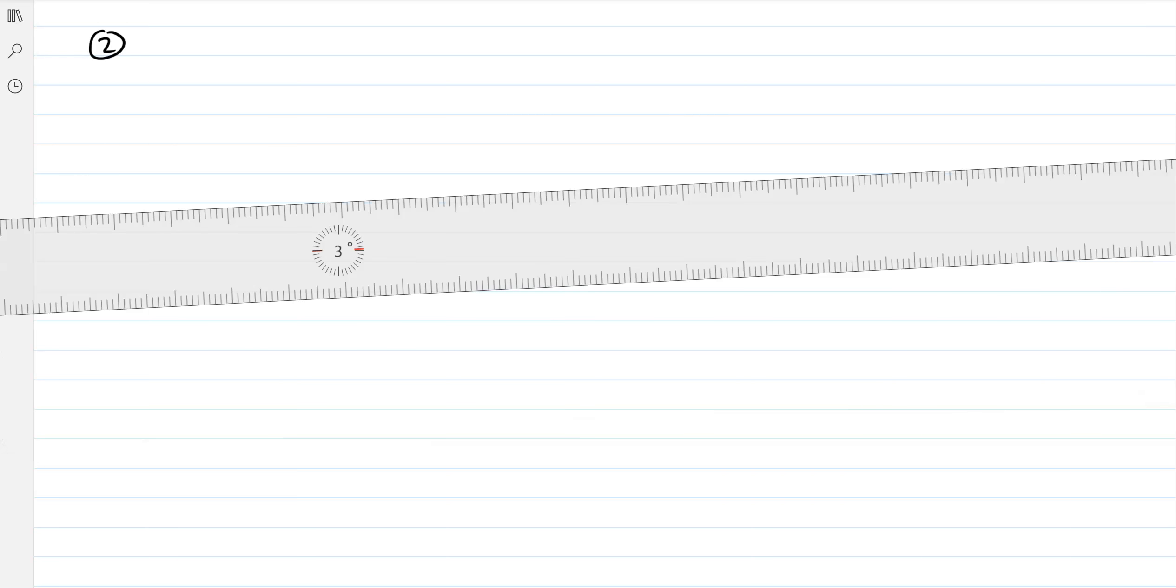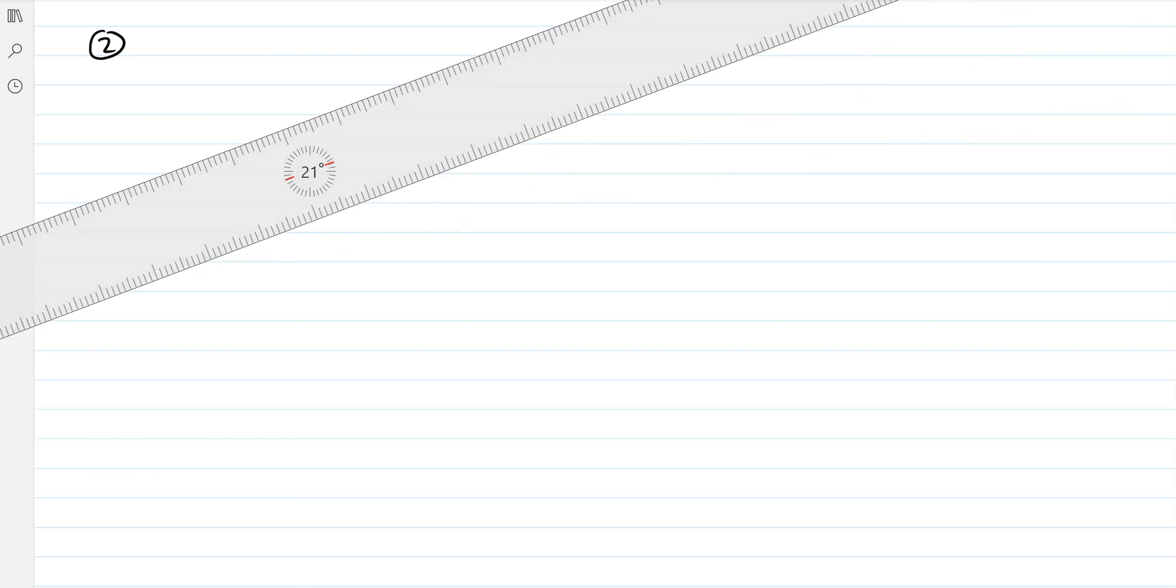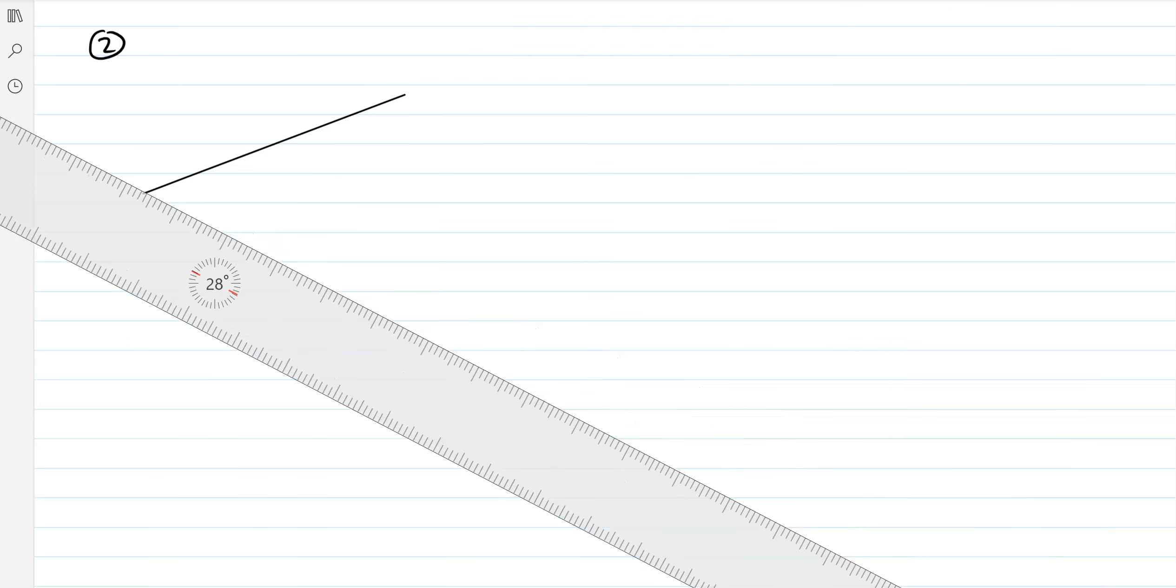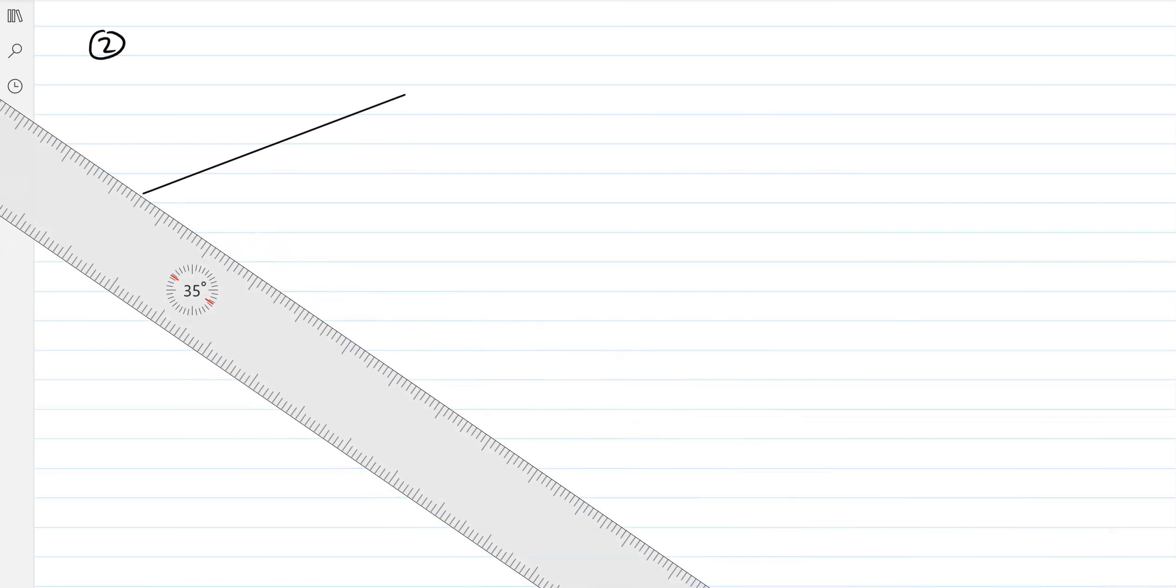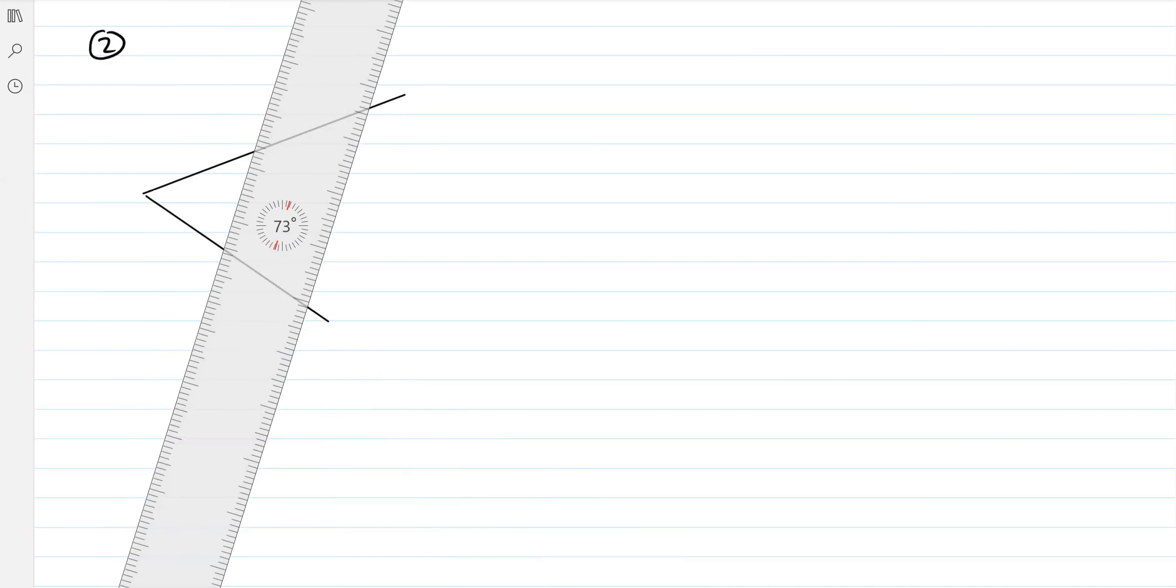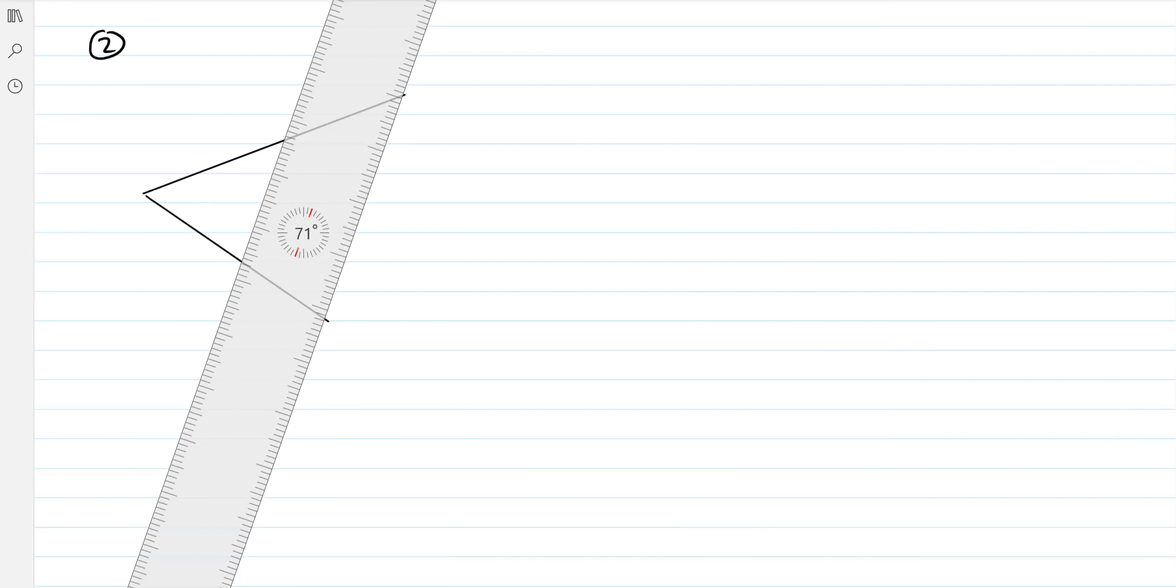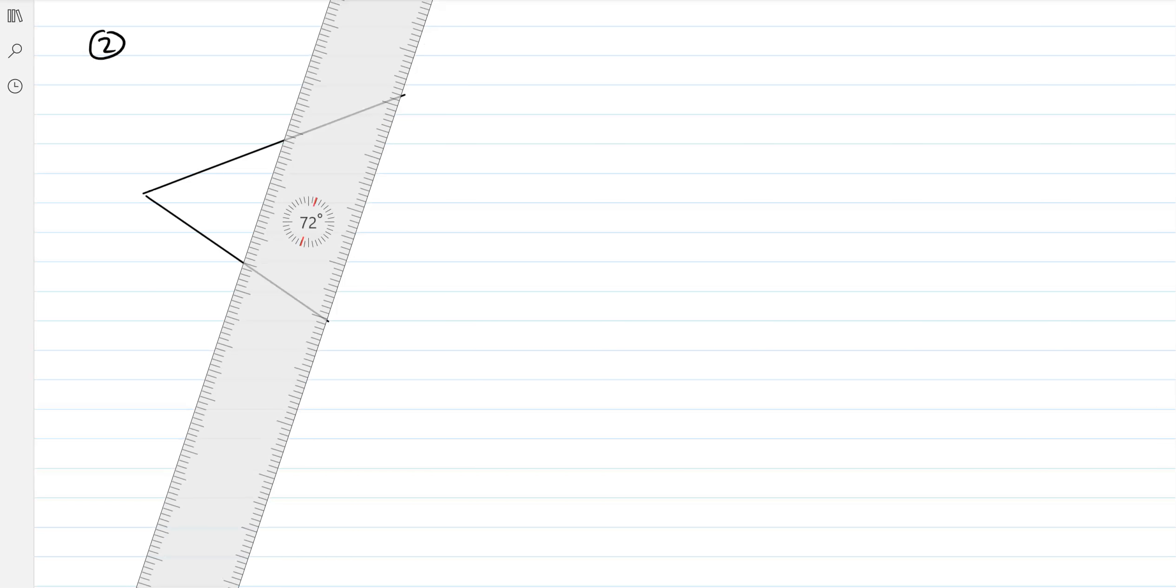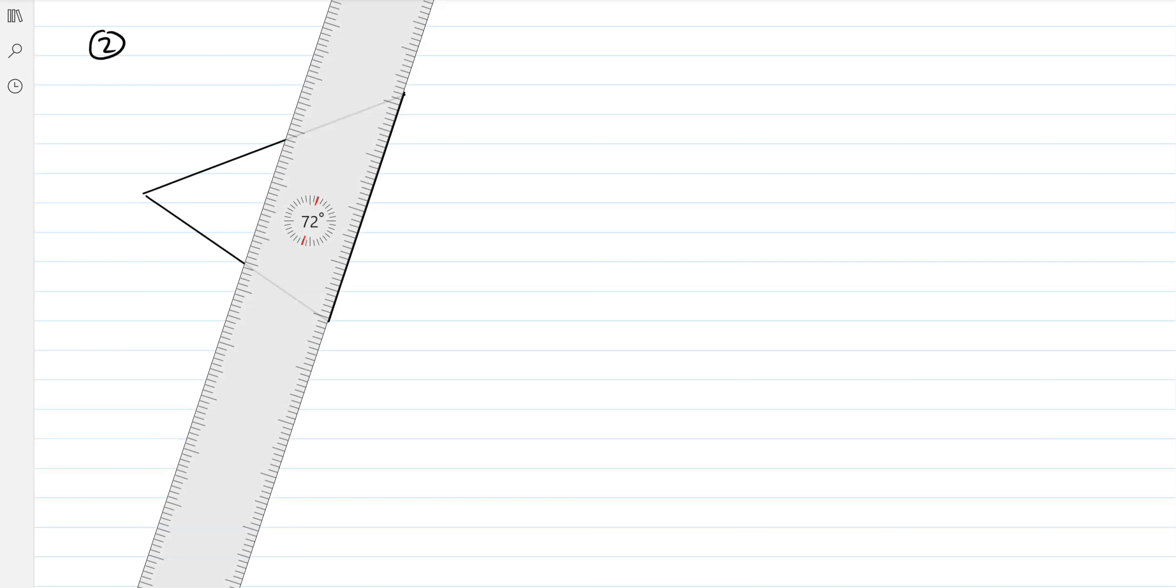Here's cosine rule example number two. Draw it out. Slightly different orientation this time. I'll try to remember to put the x in this time because I forgot it in the last video. So there's our triangle ABC.